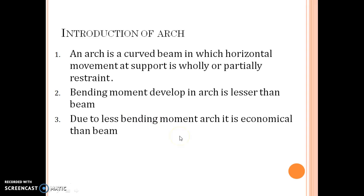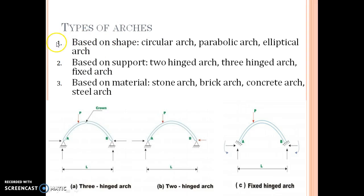Types of Arches: Arches can be classified on different criteria in following three types - based on shape, based on support, and based on material. I have shown three types of arches based on support. First is three-hinged arch, second is two-hinged arch, and third is fixed-hinged arch. In three-hinged arch, two hinges are provided at the ends and third hinge is provided at the crown. Crown is the highest point of the arch.